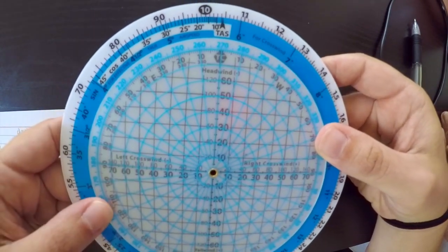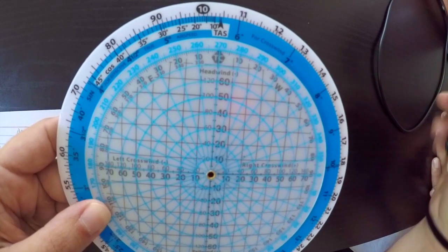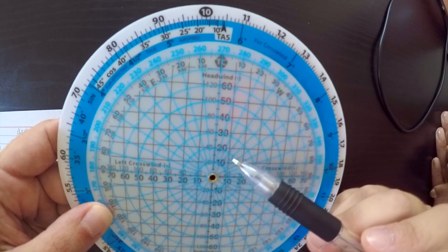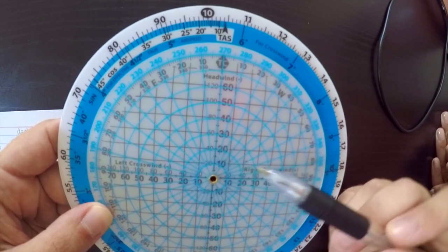Now we set our winds. We're from 310 degrees at 15 knots, so 310 is over here, 15 knots, track it in, it's about there. There should be a little dot right there, if you can see.